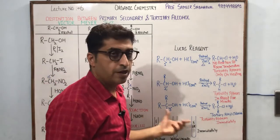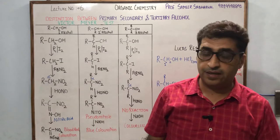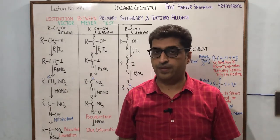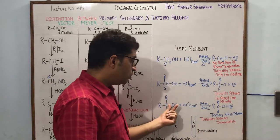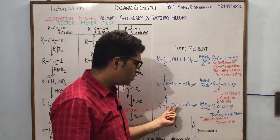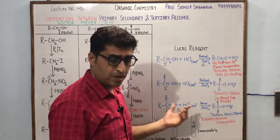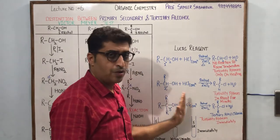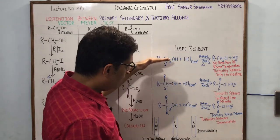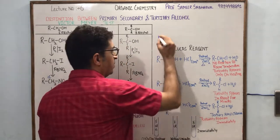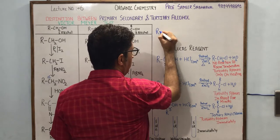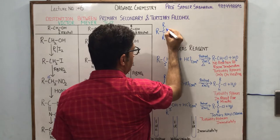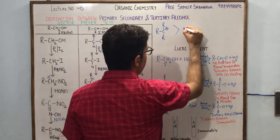If I take tertiary alcohol — as I said earlier, nucleophilic substitution in alcohol is less favorable because it is difficult to remove OH negative, since OH negative is not a good leaving group and is a strong nucleophile with lesser tendency to come out. But comparing 1°, 2°, and 3° alcohols, the 3° carbocation is the most stable intermediate. Reaction occurs only if the intermediate is formed.